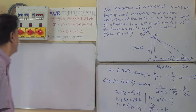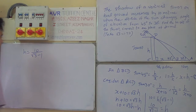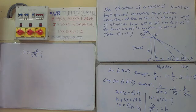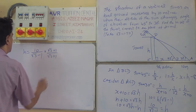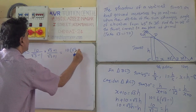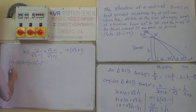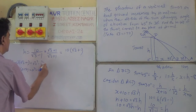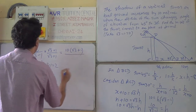Now we have to rationalize the denominator. H equals 10 by root 3 minus 1. The conjugate of root 3 minus 1 is root 3 plus 1. Multiply and divide by root 3 plus 1. This equals 10 times root 3 plus 1, divided by root 3 minus 1 times root 3 plus 1, which equals root 3 squared minus 1 squared, using the identity A minus B times A plus B equals A squared minus B squared. Root 3 squared is 3 minus 1 equals 2.